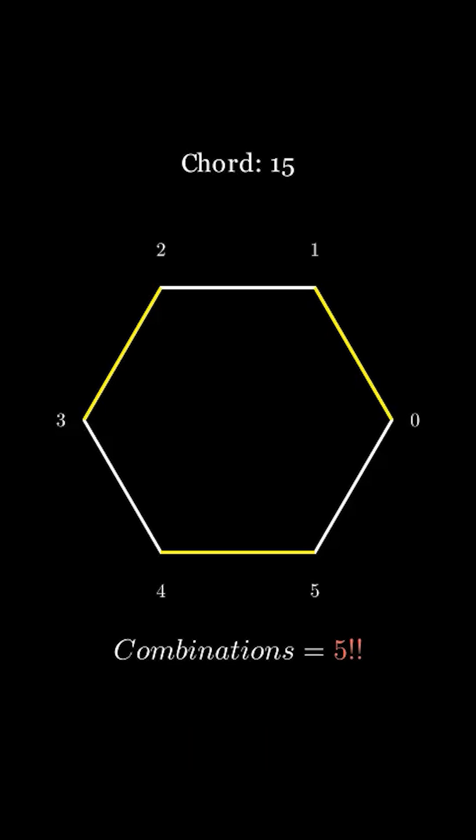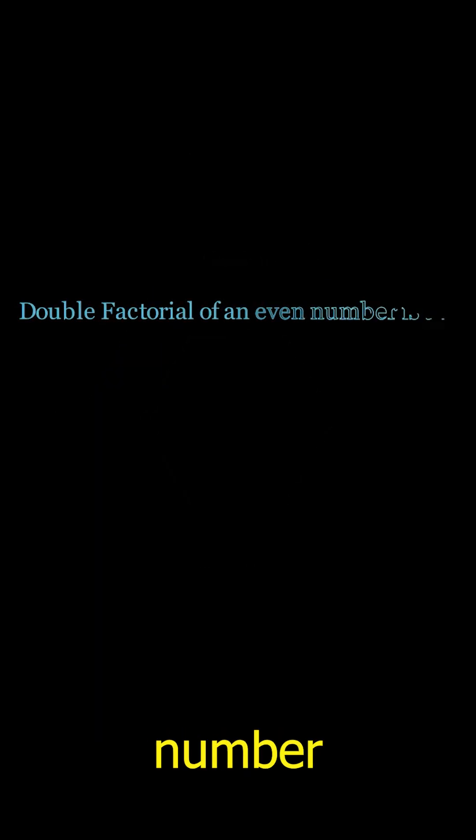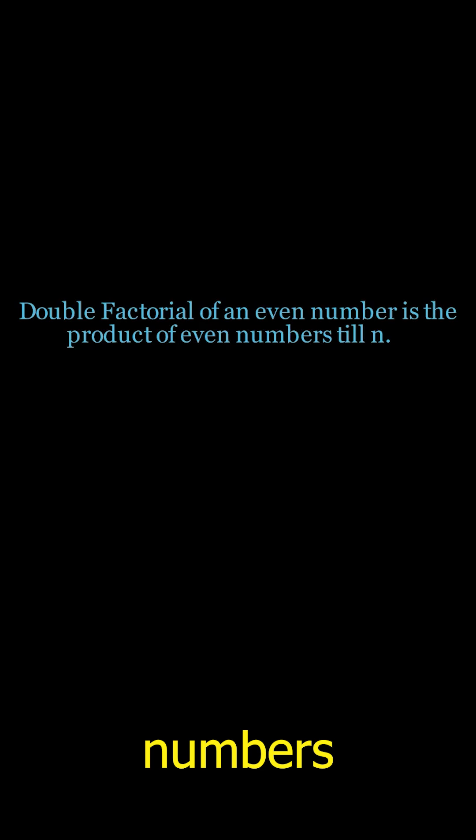But what is 5 double factorial? A double factorial for an even number is the product of all even numbers till n. Therefore, 8!! is 8 × 6 × 4 × 2.